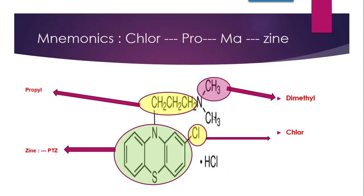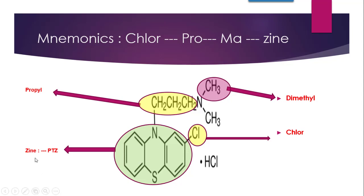Now, the mnemonic for Chlorpromazine. The name is split into four parts: Chlor-pro-m-azine. 'Chlor' stands for chlorine. 'Pro' stands for propyl. 'M' stands for methyl. 'Zine' stands for PTZ — phenothiazine. So using these four split-ups, you can reconstruct the structure: start with the phenothiazine ring, then on the nitrogen draw propyl (3-carbon chain), then N-dimethyl at the third carbon of propyl, and chlorine at the second position of the ring.